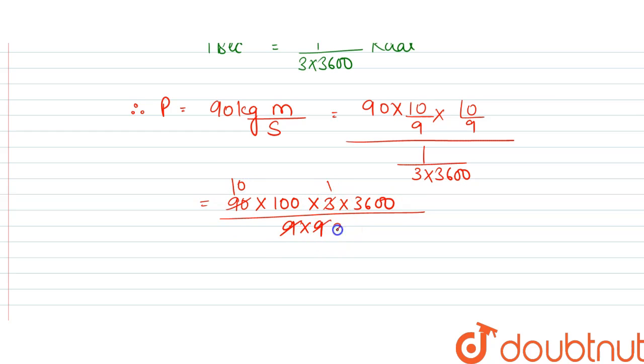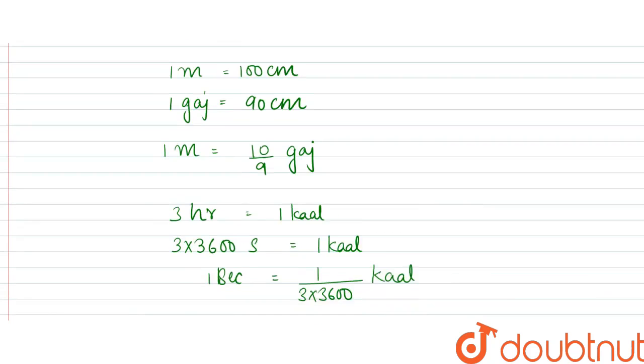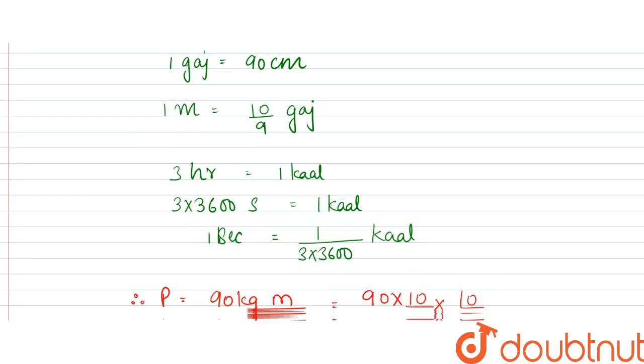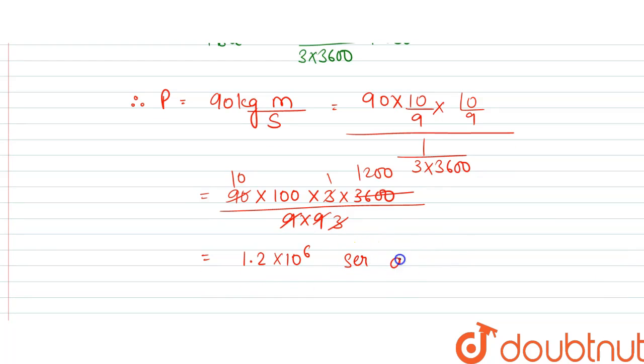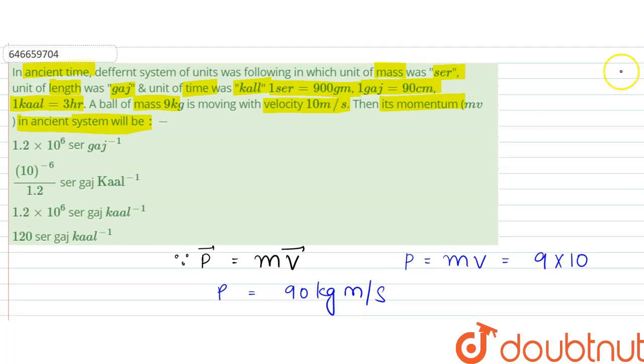This becomes 1200, so this becomes 1.2 times 10 to the power 3 times 10 to the power 6, which is 1.2 times 10 to the power 9 ser gauge kal inverse. So option C is the correct answer. Thank you.